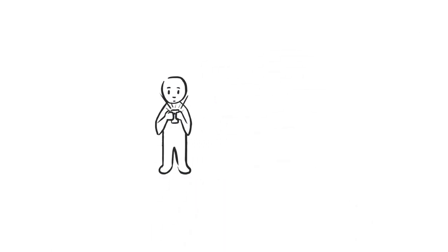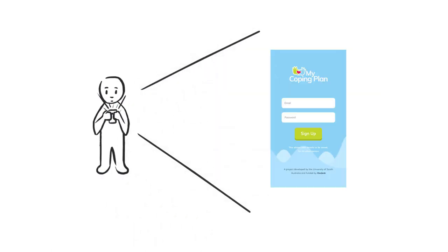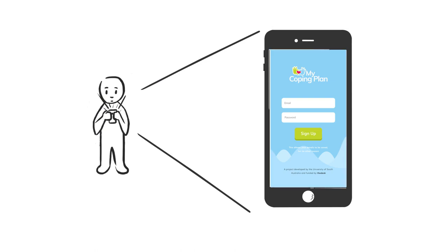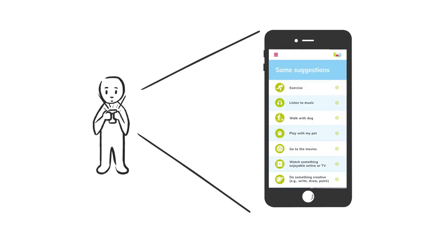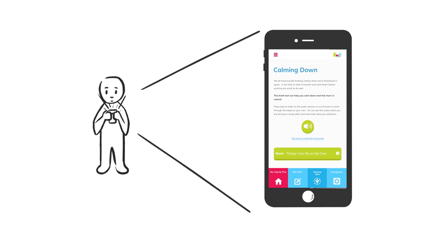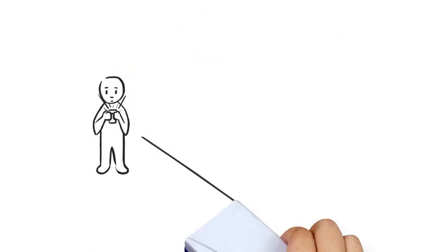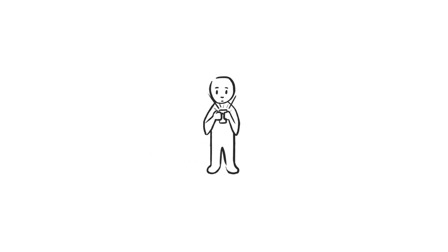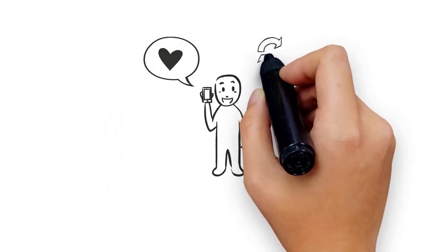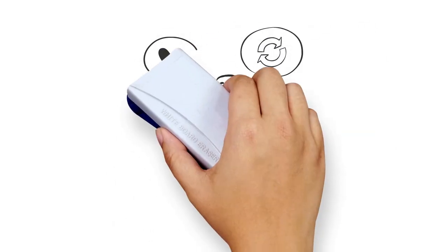A coping plan is our own individual plan to remind us to use healthy coping strategies when we are distressed. It includes coping self-talk and calming down strategies. Emergency services are at the end of all our coping plans to use if and when we need immediate support.